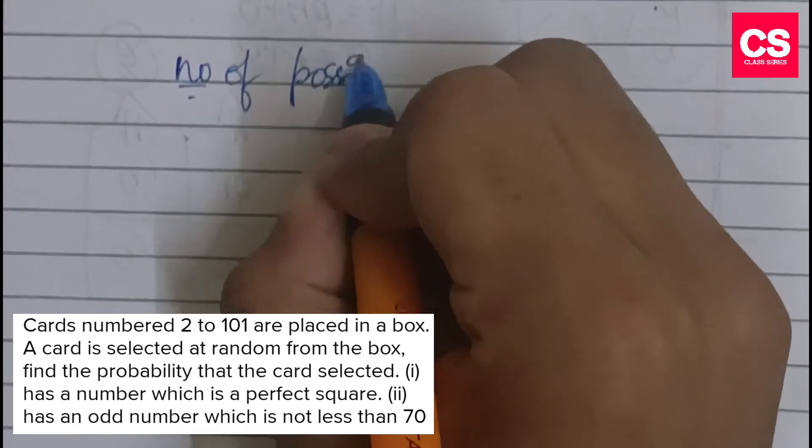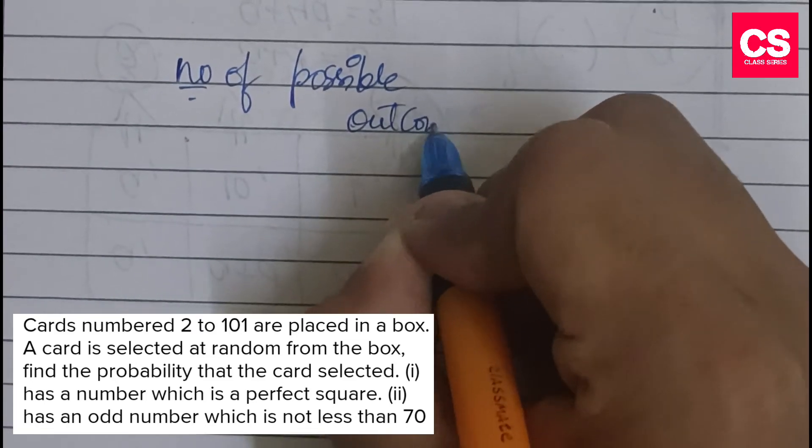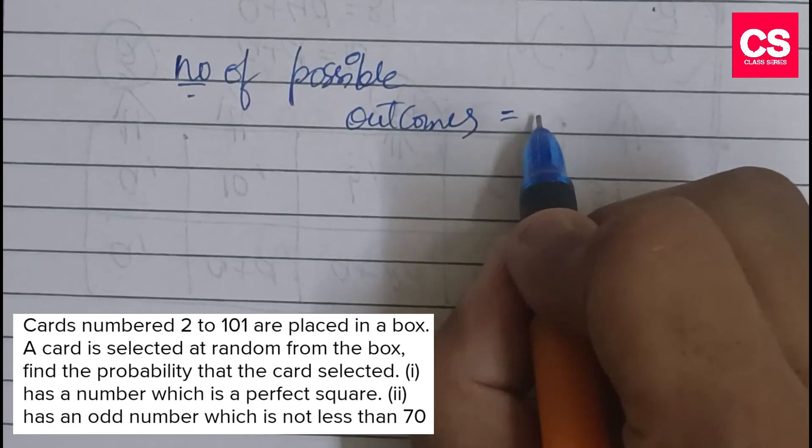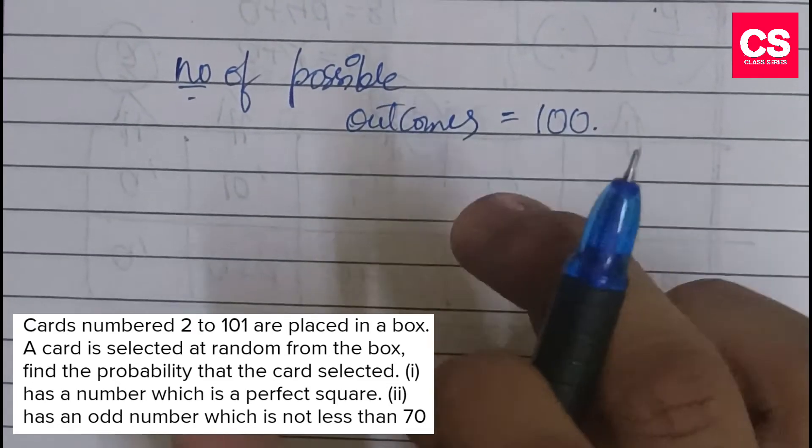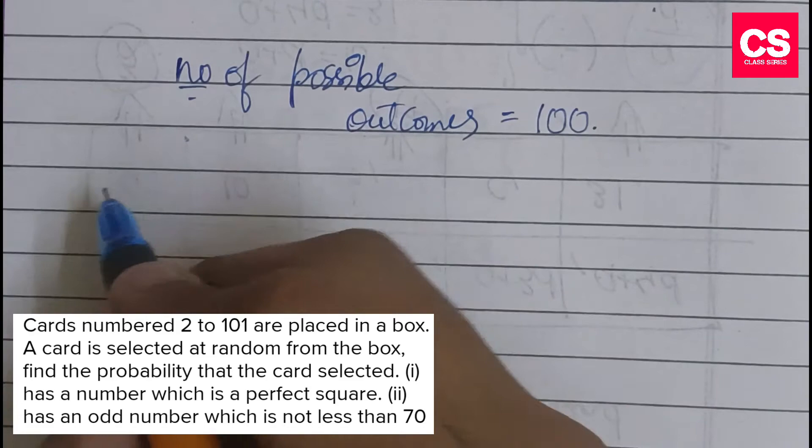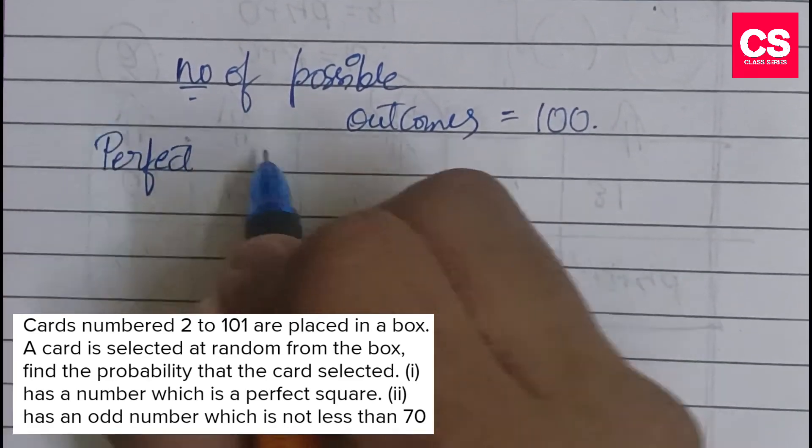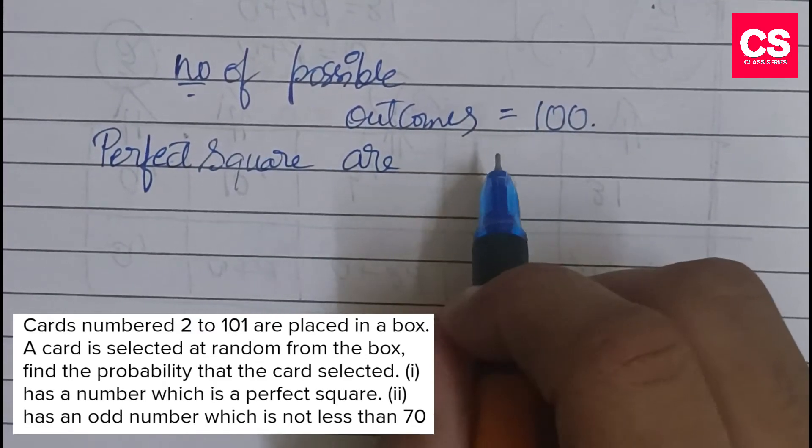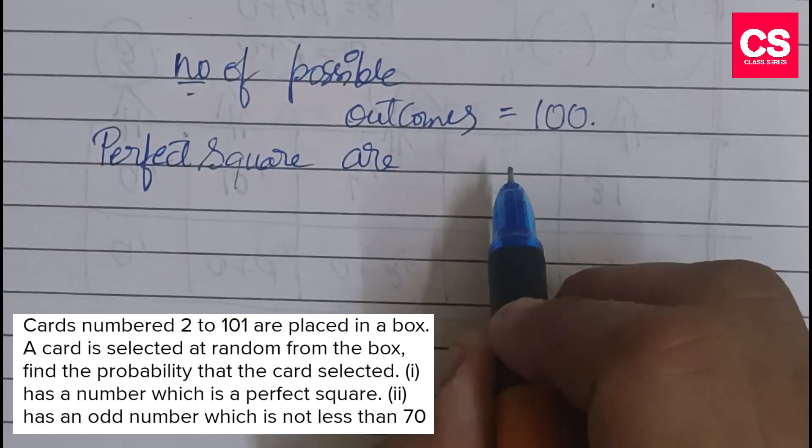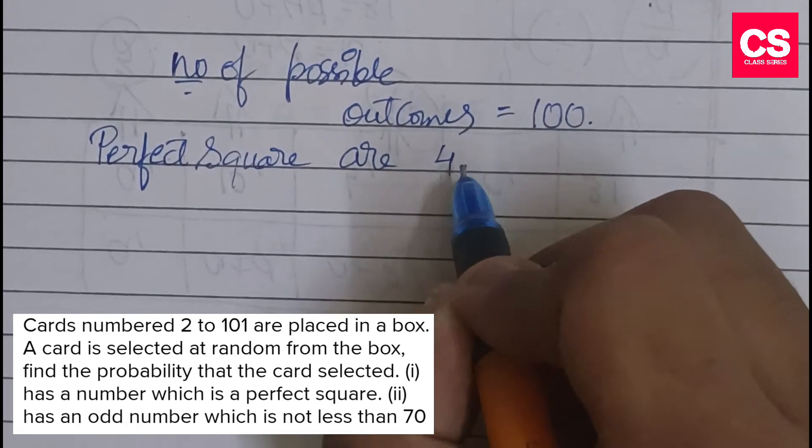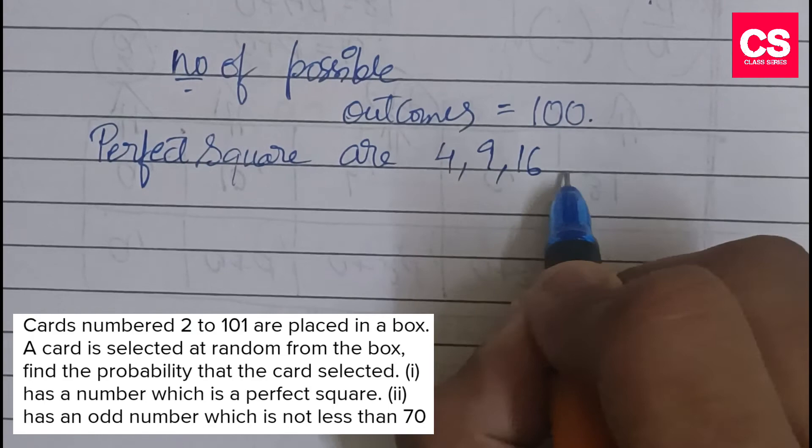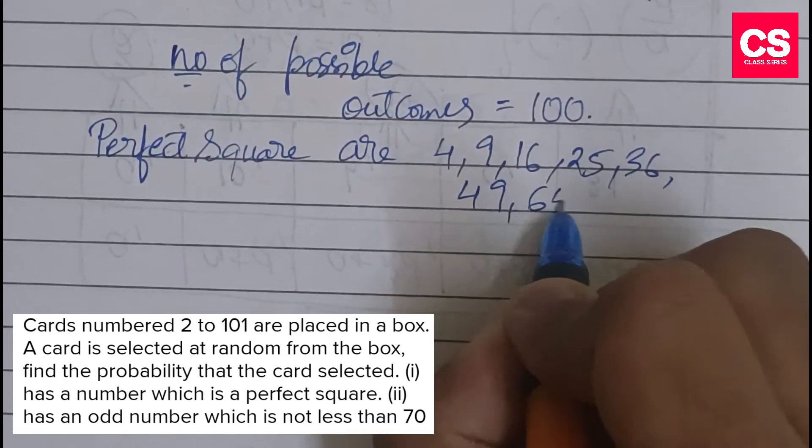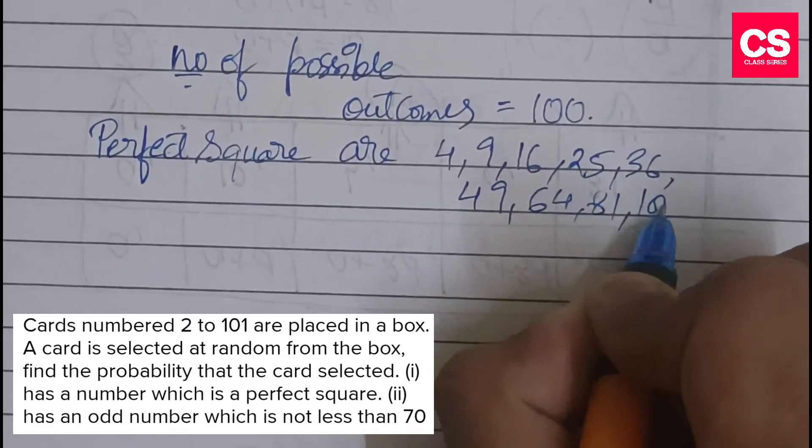What are the perfect squares between 2 and 101? 2 squared is 4, 3 squared is 9, 4 squared is 16, then 25, 36, 49, 7 squared is 49, 64, 81, 100, 10 squared is 100.